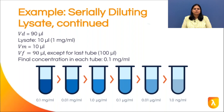After thoroughly mixing the first tube, we take a fresh pipette tip and move 10 microliters from the first tube to the second tube. We repeat this procedure until we make 6 tubes of the diluted stock. In the end, we will have 6 tubes of serially diluted solution with a final volume of 90 microliters, except for the last tube which will have 100 microliters total volume. Remember to mix each tube thoroughly and use a fresh pipette tip before moving to the next tube.